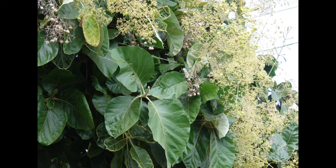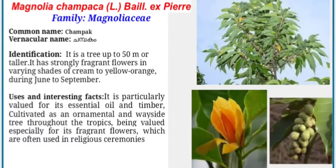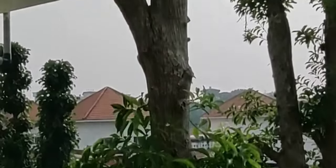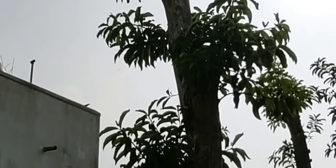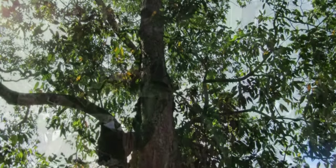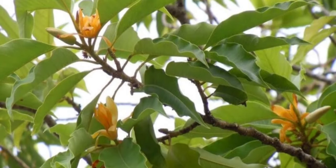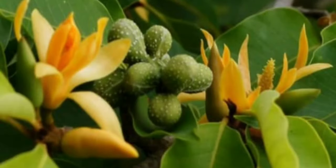Magnolia champaca, family Magnoliaceae. Commonly called champak and vernacularly called Champagam. It has strongly fragrant flowers in varying shades of cream to yellow orange. It is particularly valued for its essential oil and timber. It is cultivated as an ornamental and wayside tree throughout the tropics, especially valued for its fragrant flowers which are often used in religious ceremonies.